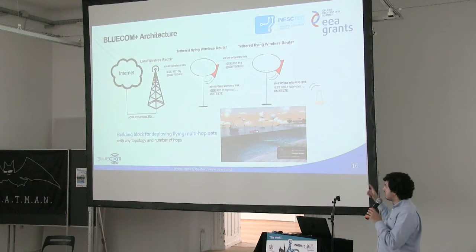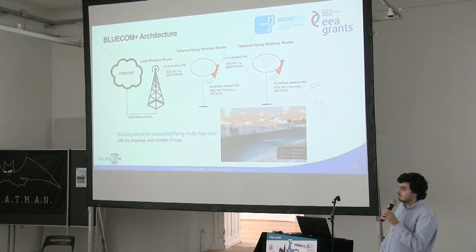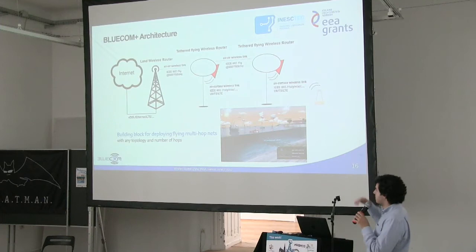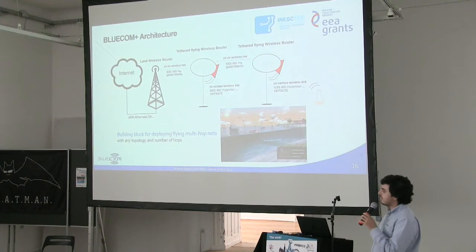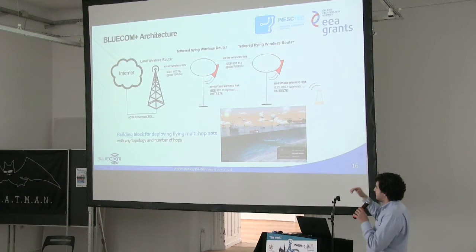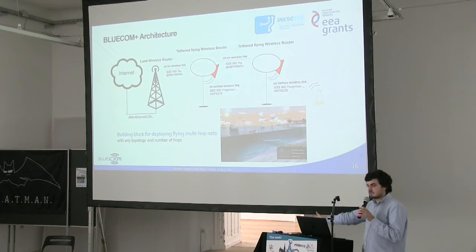This is the architecture of the network. We have a land wireless router installed in a lighthouse, because it's tall and we can take advantage of that height. Between the balloons we have a network at 500 or 700 MHz. Between the balloons and the surface we can have regular Wi-Fi or an LTE Pico station. We use a multi-hop network for extending the coverage further.